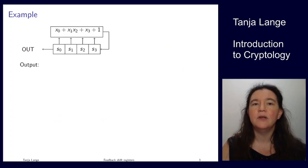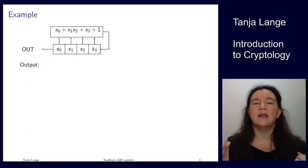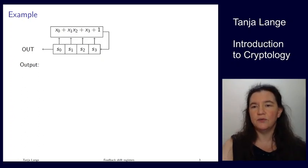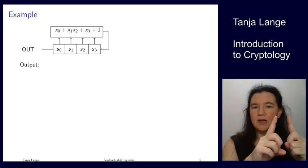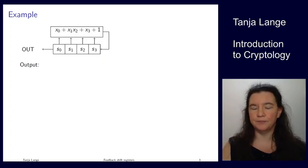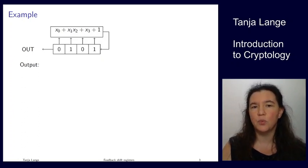So here's an example. I'm having a state size of length 4, so I have S0 to S3. And I'm updating it by taking the first input plus the product of the next two plus the last one and then plus 1. So as an example, I'm putting in the initial state 0, 1, 0, 1.